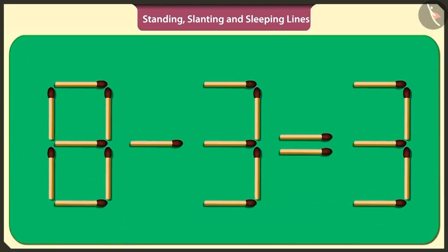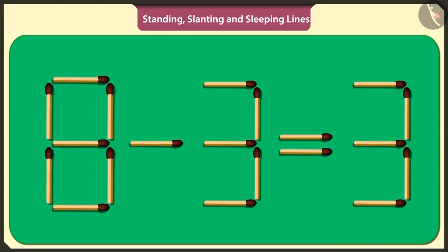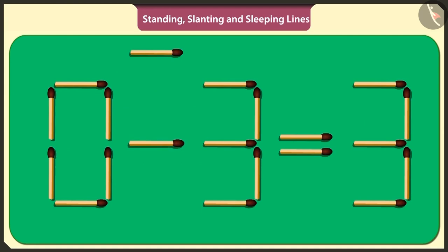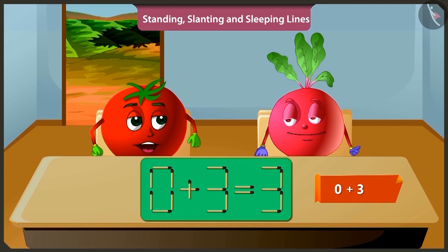Okay. Hmm. If I lift this sleeping stick in the middle of number eight and place it above the symbol of subtraction like this, then the puzzle will be solved. Yes. Adding three to a zero will make three only. Well done.